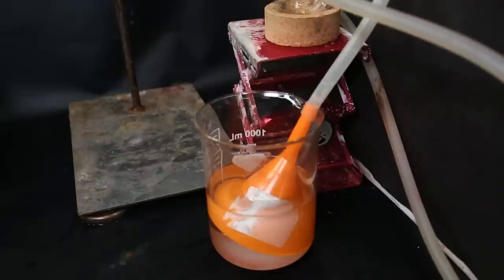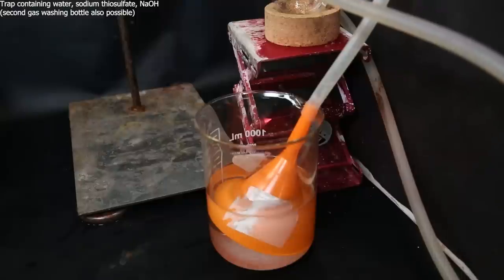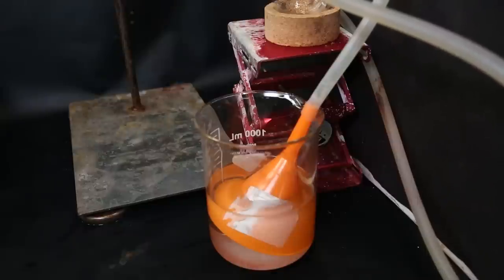Now to the vacuum adapter, I connect an inverted funnel trap. The funnel is submerged in a beaker that contains a solution of sodium thiosulfate and sodium hydroxide. Chlorine that escapes will react with the sodium thiosulfate, and any arsenic-3-chloride will react with water, which will produce hydrochloric acid and arsenic acid, which will both get neutralized by the sodium hydroxide.